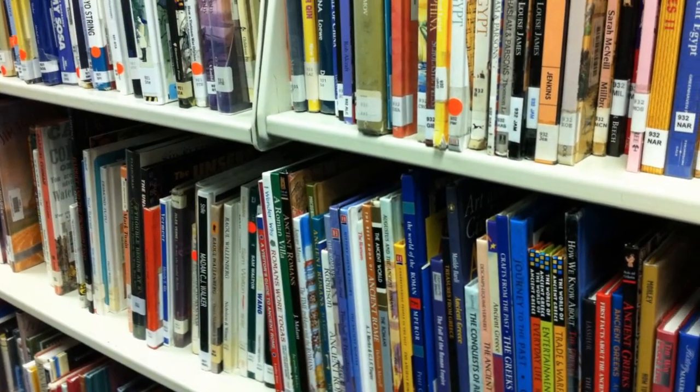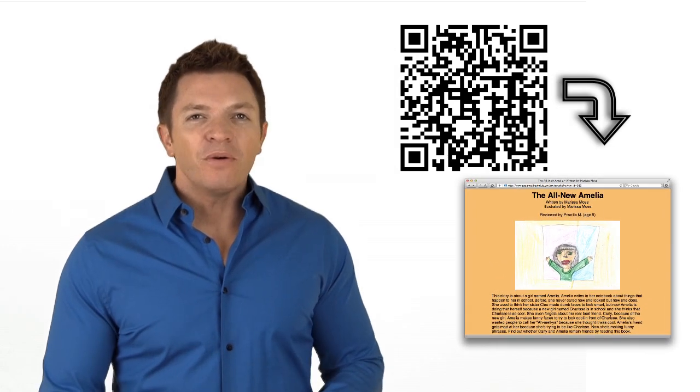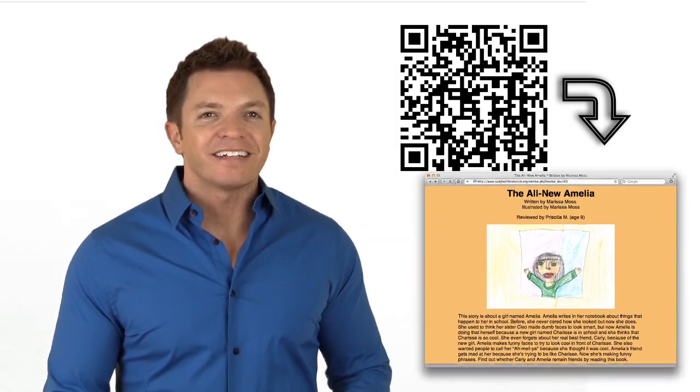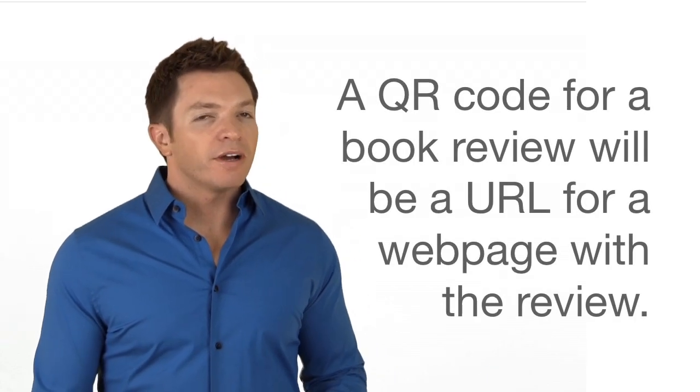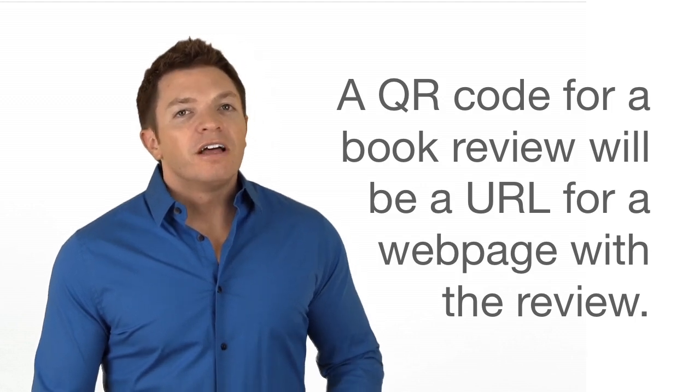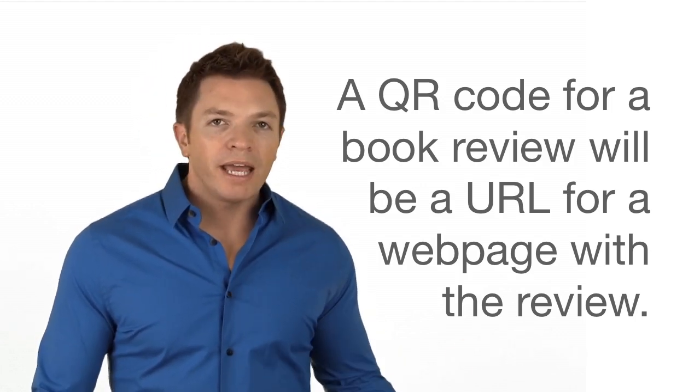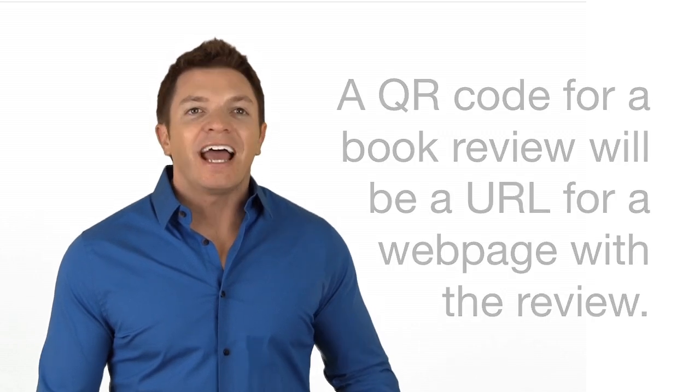Walk into some school libraries and you might find a QR code pasted inside the covers of certain books. Scan the code and you are taken to a book review by a student at that school. That means when students are interested in reading a book, they can scan the code and see what their peers think of it. Keep in mind that book reviews are going to be longer than 250 characters, which is the limit of most QR code generators. So, the QR code for a book review would be a URL that goes to a webpage, a blog, or wiki that has that review.